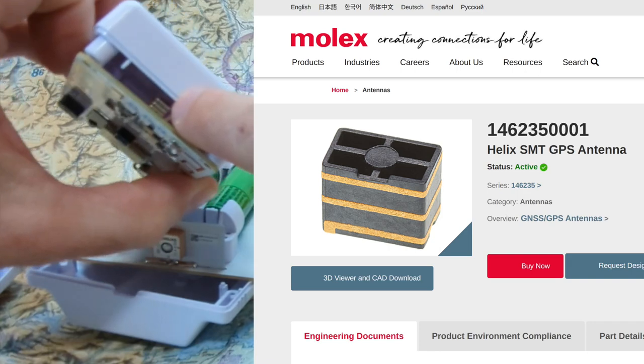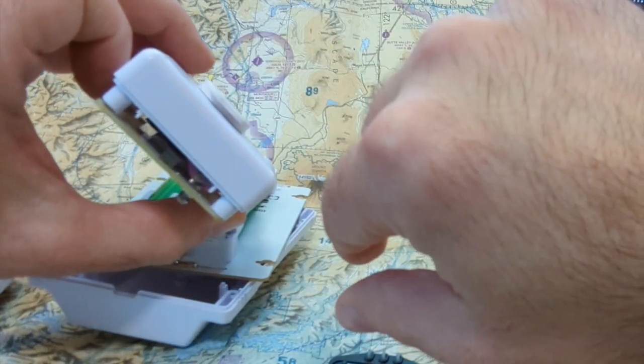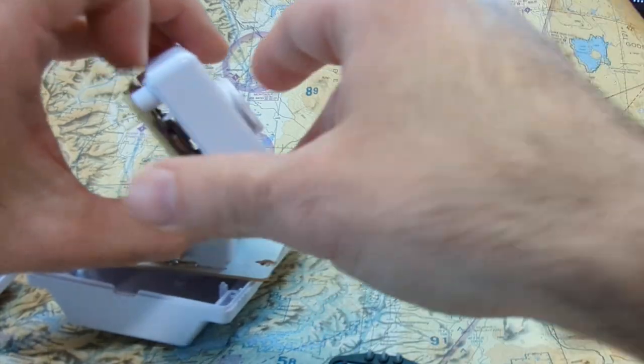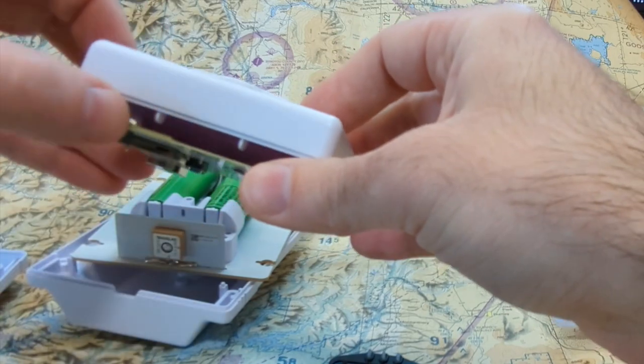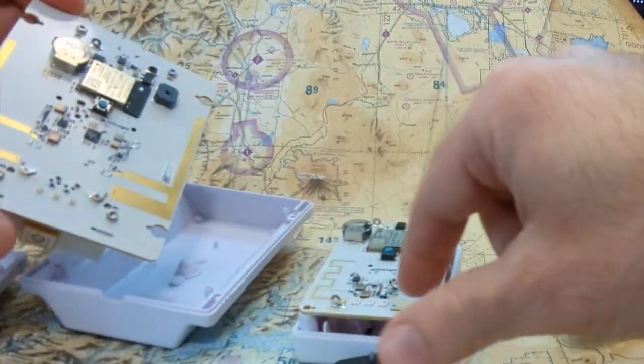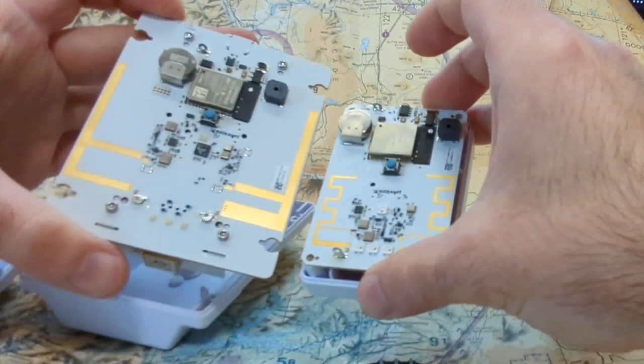You can see the one battery underneath there and just the hints of the GPS chip right there. Again, it's the same chip as the other one. You have to look underneath, and there's the SD card. One other difference is this big antenna or backplane. You can see the difference in size. It's about twice as big on this one.